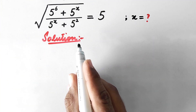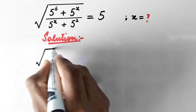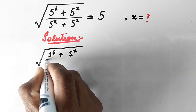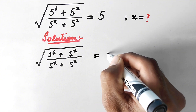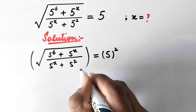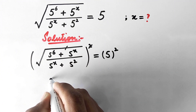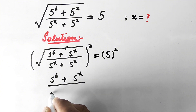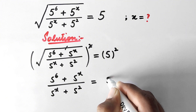In the first step we will raise both sides to the power of square. We write square root of (5 to power 6 plus 5 to power x) divided by (5 to power x plus 5 square) equal to 5, and take the square on both sides. This square root will be cancelled by the square and we get 5 to power 6 plus 5 to power x divided by (5 to power x plus 5 square) equal to 5 square.